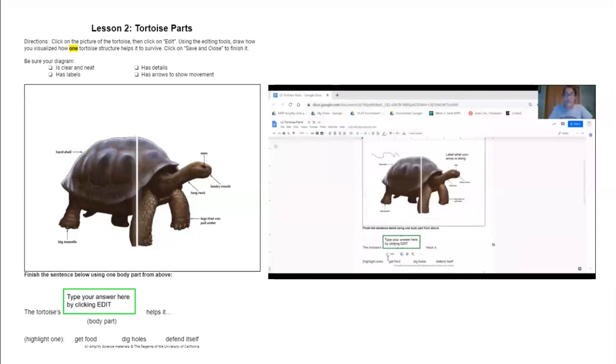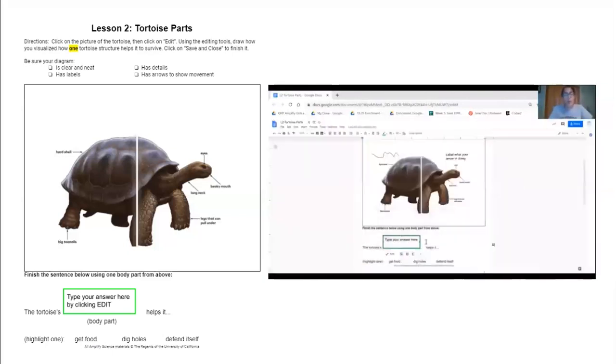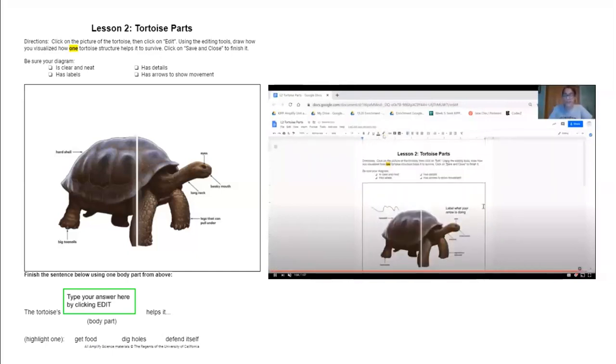Make sure you save and close so that the hard work that you did doesn't get erased. The next part of your assignment will be to finish the sentence using a body part and its function. You are going to open up this text box the exact same way that you opened up the drawing for the tortoise. Once you open it up, you can type in the body part that you visualized in the diagram. Then you are going to highlight one of the words at the bottom that matches the function for the structure or the body part that you drew. You can do that by highlighting this right here.